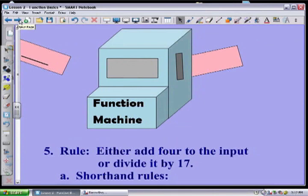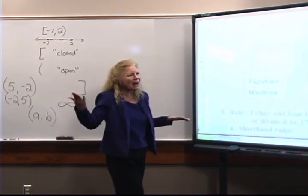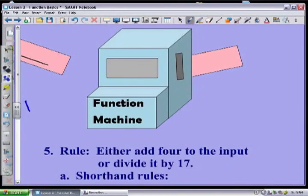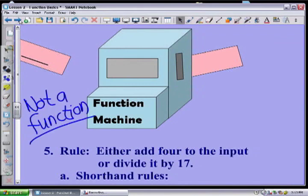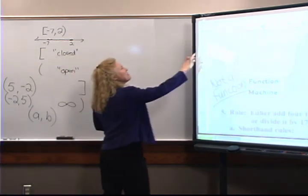Here's my last rule: either add four or divide by 17. How would you like to have that handed to you and be expected to give the correct answer when you don't know what to do with it? This is not a good rule because for any particular input I'm at a quandary — so in fact this is not a function. You are giving me two possible outputs for a single input, and I'm not okay with that.